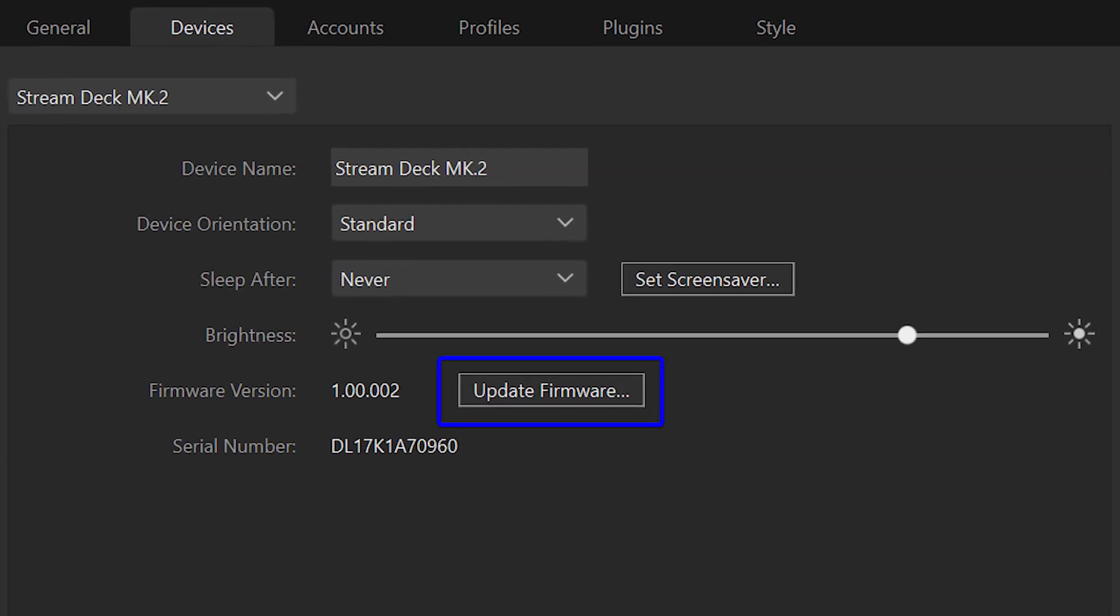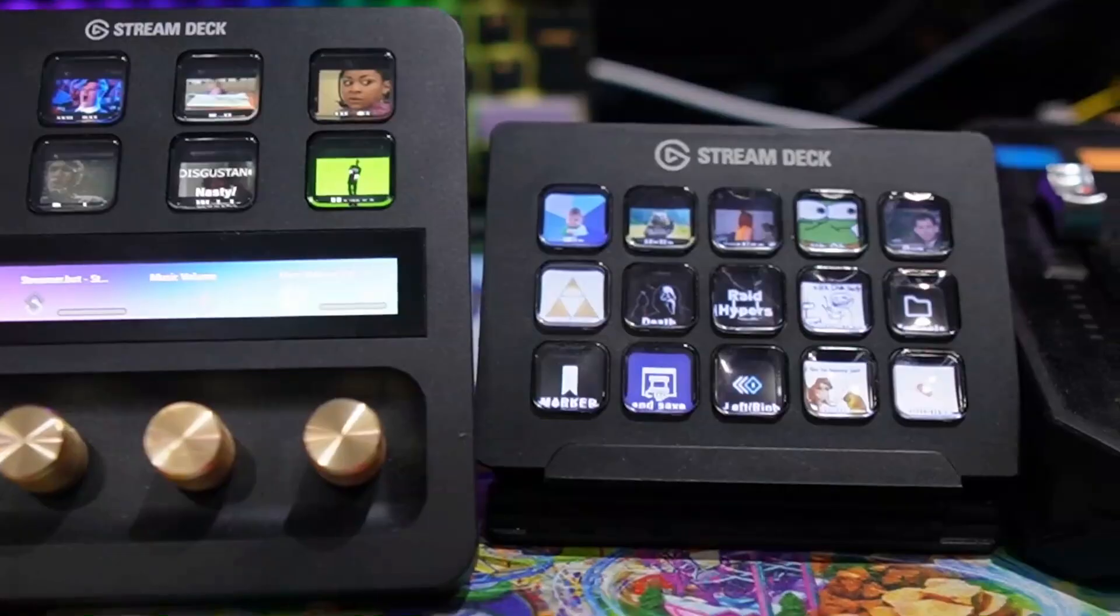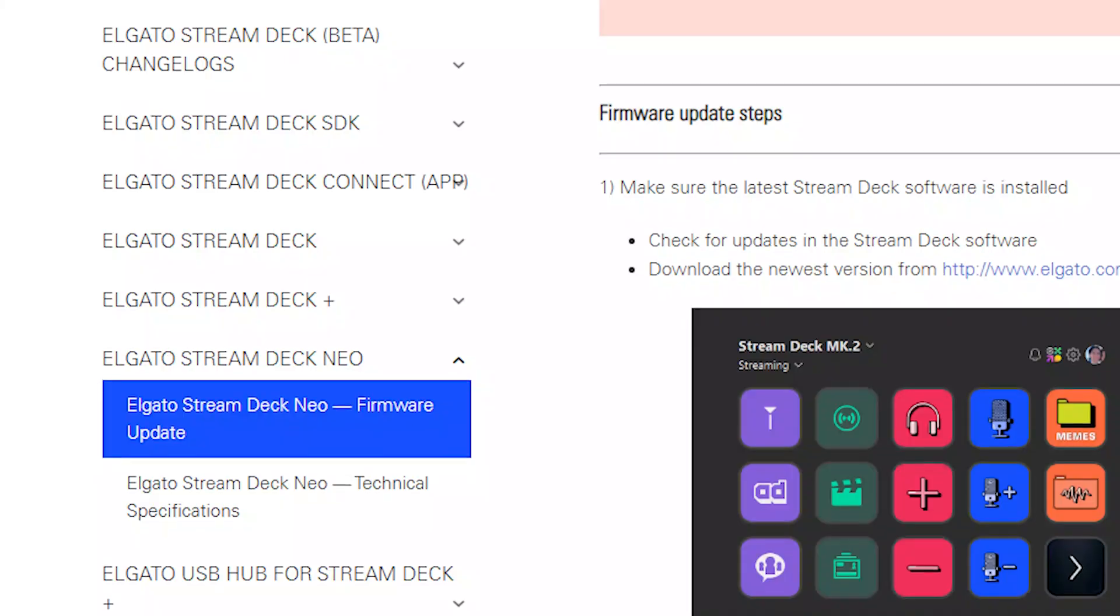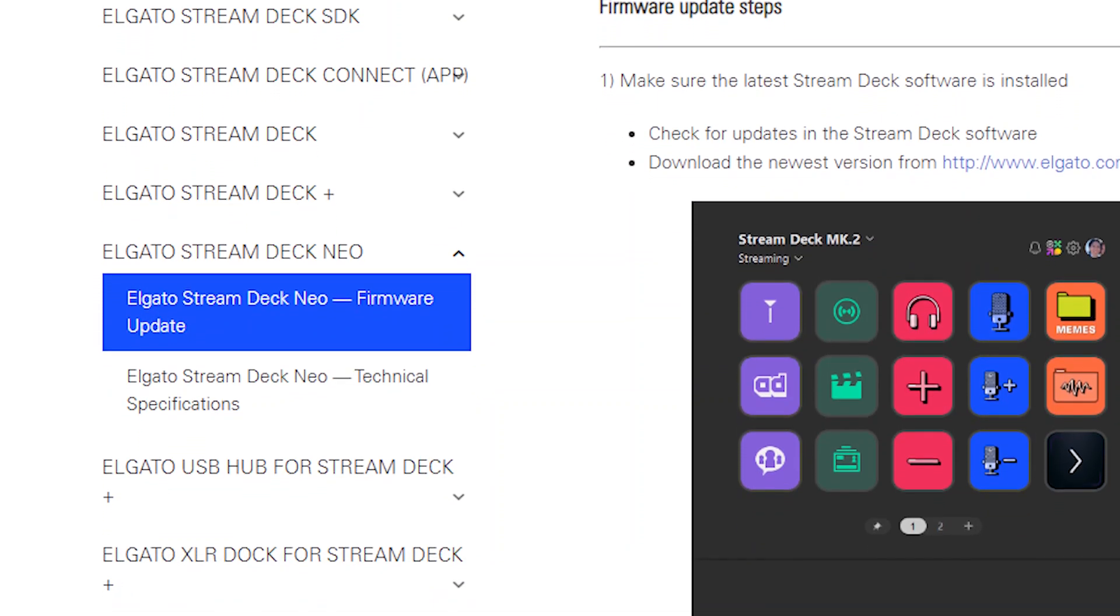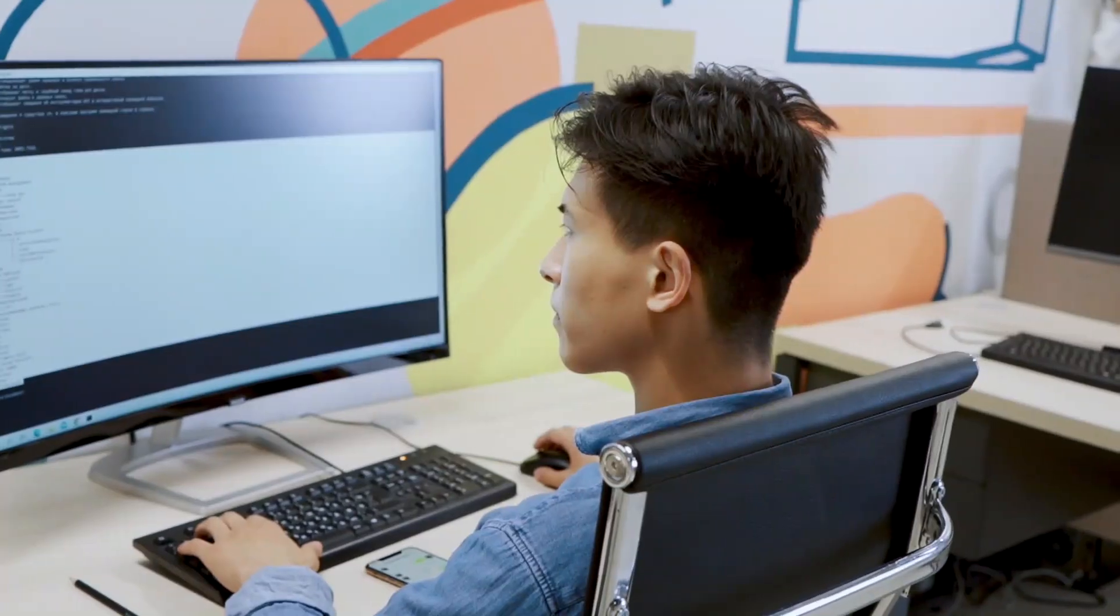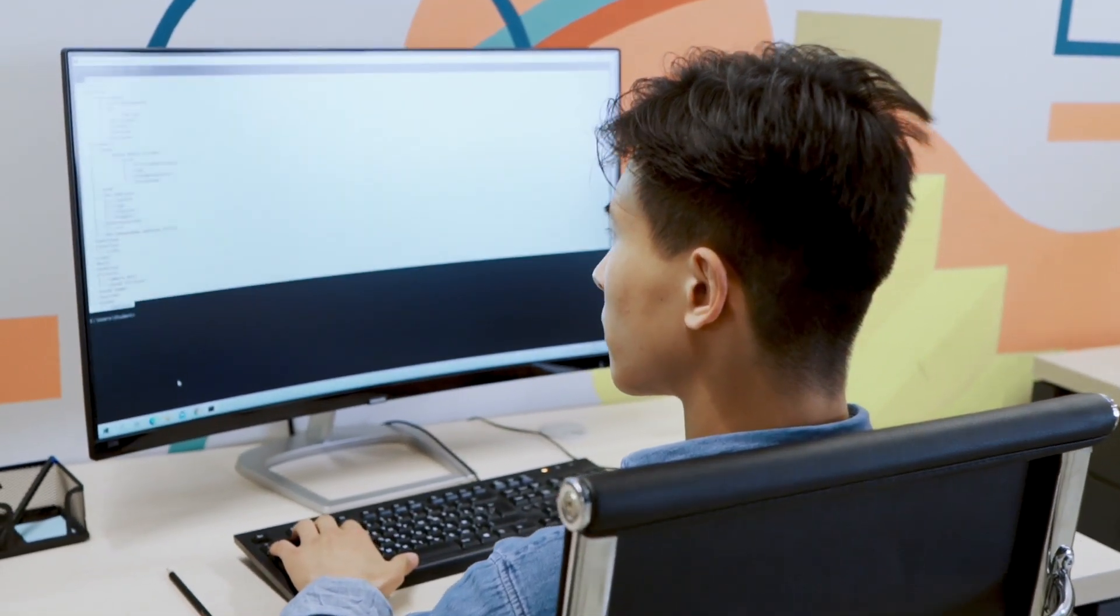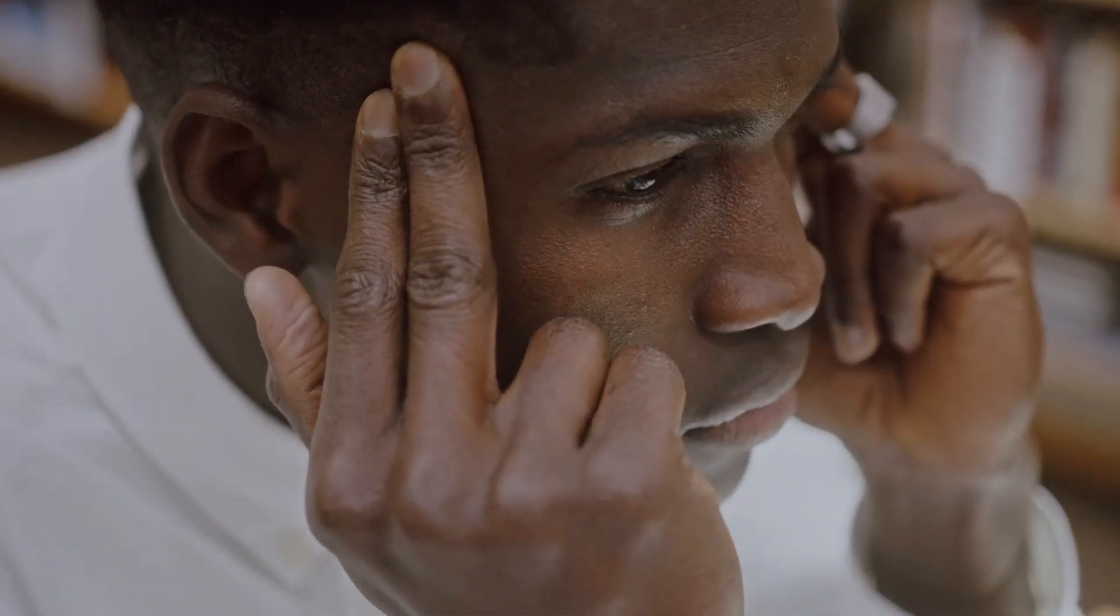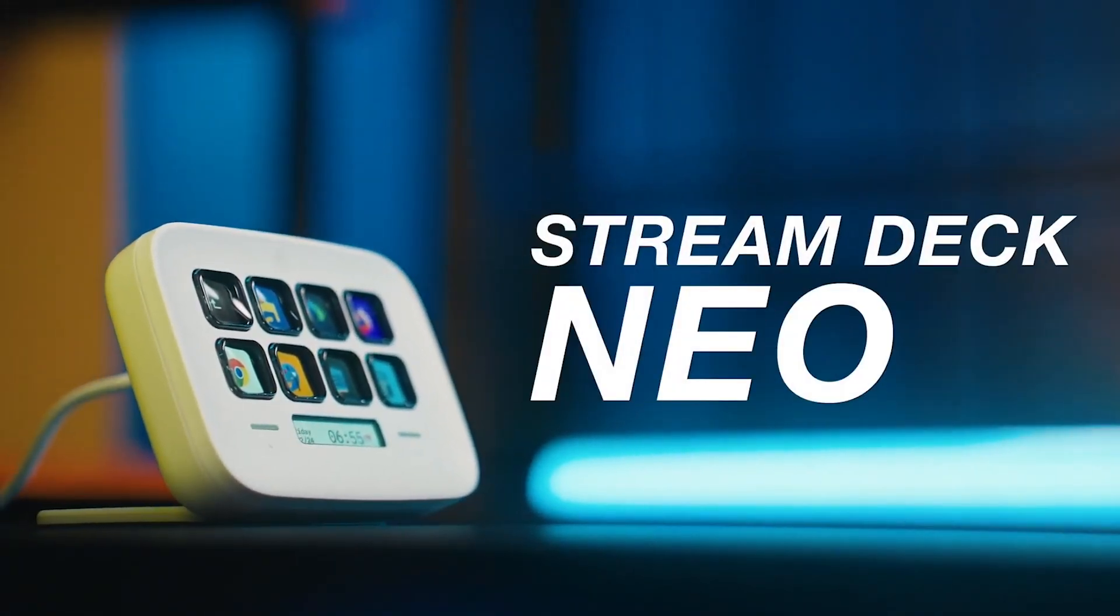Elgato has a solid track record of supporting their products with regular software updates, and the Stream Deck Neo is no exception. The software is constantly evolving, with new features and improvements being added all the time. This ensures that your Stream Deck Neo will stay relevant and functional for years to come. I believe this commitment to software support is one of the reasons why Elgato remains a leader in the content creation space.